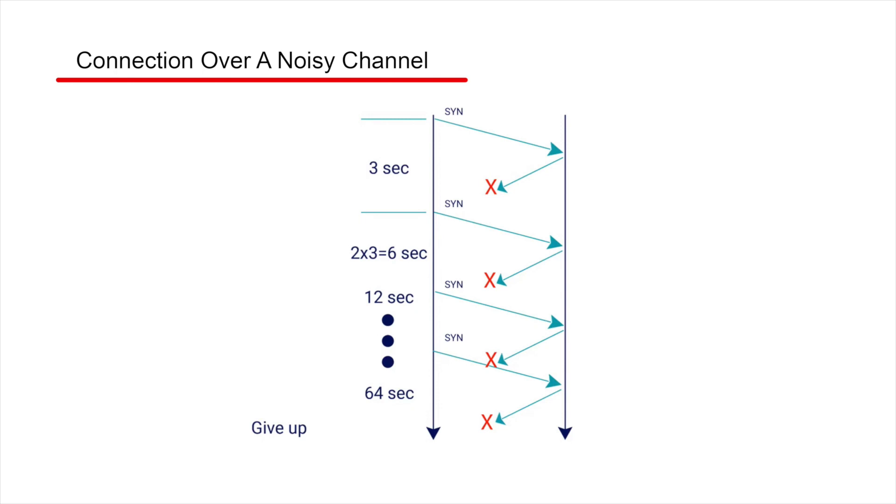It'll double the value until it reaches a maximum value of 64 seconds. And if no confirmation arrives from the server, the client abandons the request and notifies the app that the server cannot be reached. Does the time increase have to be exponential? Not necessarily. But in our example, we'll do it like that.